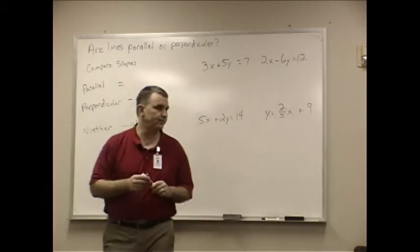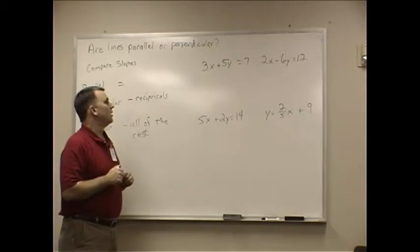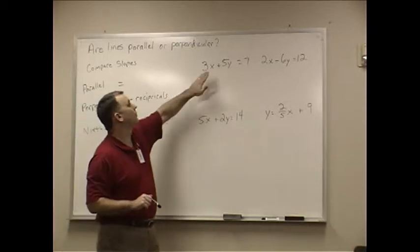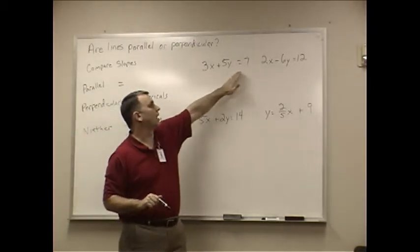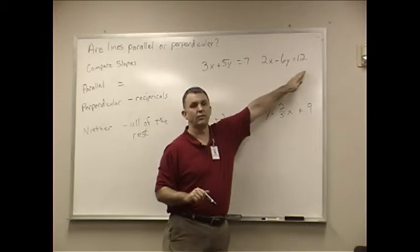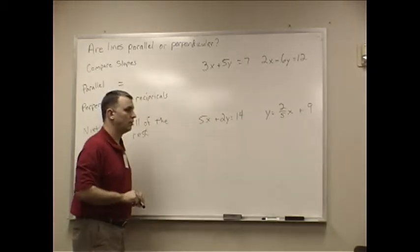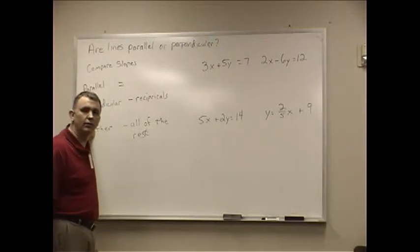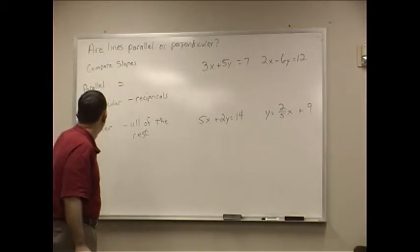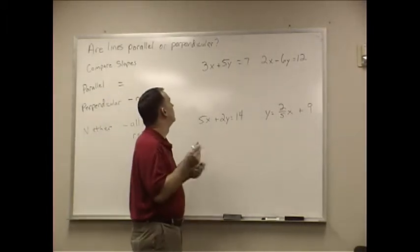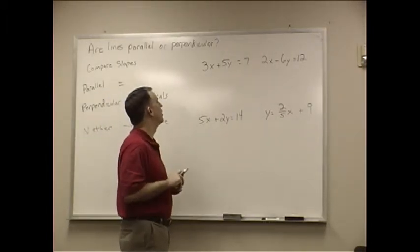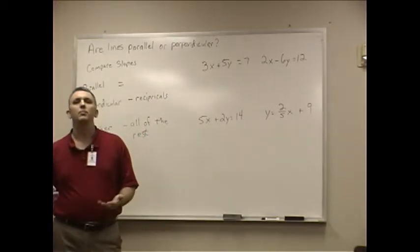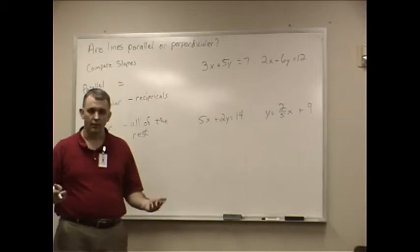I've got a couple different pairs of lines up here. For the first pair, I've got 3x plus 5y equals 7 and 2x minus 6y equals 12. So if we look at those, can you see the slope? And the answer is no, you cannot see the slope. So when you look at the slope, how would you find that?